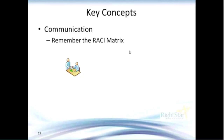I'm referring here to the RACI matrix. For those of you who were on previous sessions, you may remember I talked about RACI, which stands for Responsible, Accountable, Consulted, and Informed. It's often helpful to identify, for any given activity within the IT processes, who ultimately is accountable for the process — and you should only have one person who's accountable — then who is responsible for the activities, who should be consulted, and who should be informed.